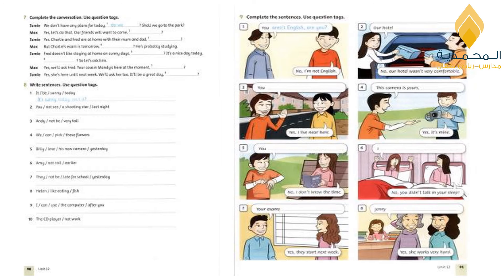Exercise number seven: complete the conversation using question tags. Jamie: 'We don't have any plans for today, do we? Shall we go to the park?' Max: 'Yes, let us do that. Our friends will want to come, won't they?' Jamie: 'Charlie and friends are at home with their mom and dad, aren't they?' Max: 'But Charlie's exam is tomorrow, isn't it? He's probably studying.' Jamie: 'Fred doesn't like staying at home on sunny days, does he? It is a nice day today, isn't it? So let us ask him.' Max: 'Yes. We'll ask Fred. Your cousin Mandy is here at the moment, isn't she?' Jamie: 'Yes. She is here until next week. We'll ask her too. It'll be a great day, won't it?'